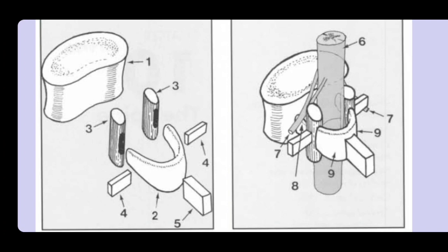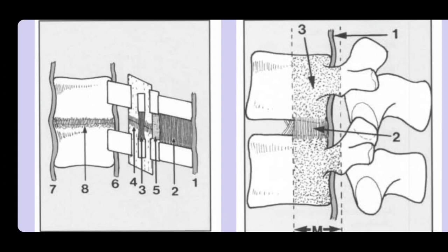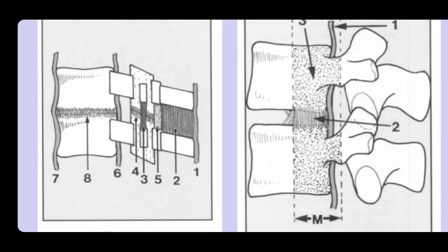Nerve roots exit the vertebral canal at each level. Compression of the spinal cord or nerve roots may cause neurological deficit. When the spinal cord or nerve roots are compressed or even irritated, neurological problems can occur. This depends a lot on the stability of the vertebral column and the type of fracture.